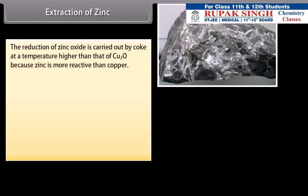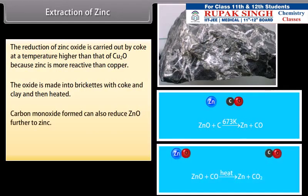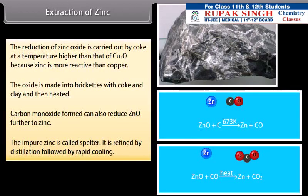Extraction of zinc. The reduction of zinc oxide is carried out by coke at a temperature higher than that of Cu2O because zinc is more reactive than copper. The oxide is made into briquets with coke and clay and then heated. Carbon monoxide formed can also reduce ZnO further to zinc. The impure zinc is called spelter. It is refined by distillation followed by rapid cooling.